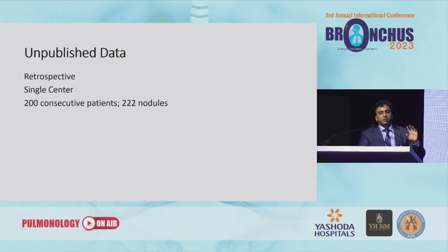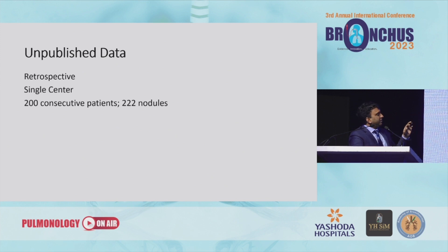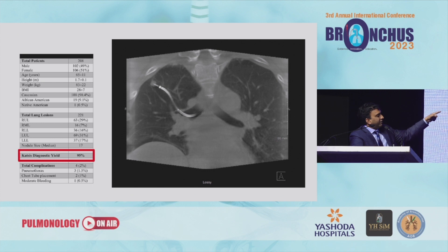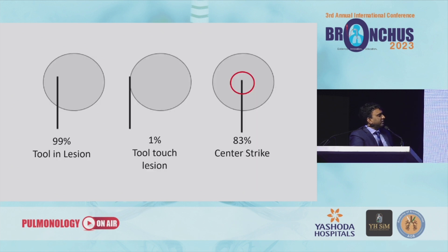We're going to try and publish a 600-patient series on CenterStrike, but this is the first 200 we did with the robot — unpublished data. We did 208 patients with a total of 221 lesions. With an ION image using tool-in-lesion and CenterStrike, we have a CATSIS diagnostic yield of 95%. Converting that to CHOIR, it's 84%. Complication rate of around 2%, with pneumothorax being the major issue and chest tube placement in just three patients.